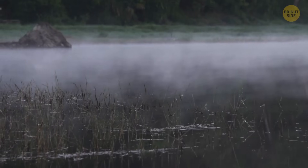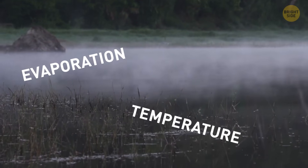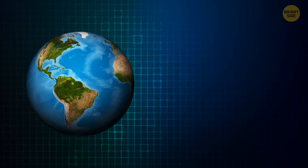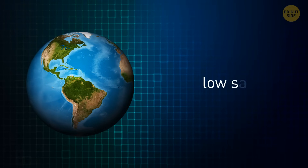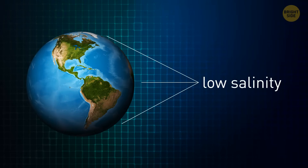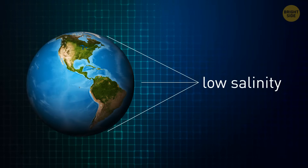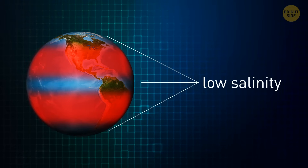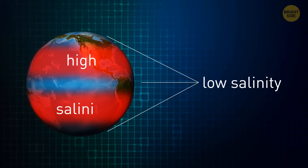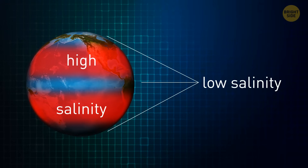Other factors that determine how salty a body of water is include evaporation, air temperature, and precipitation. The general rule is that salinity is low near the equator and at the poles. All the oceans and seas in between are likely to have high salinity.